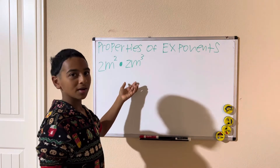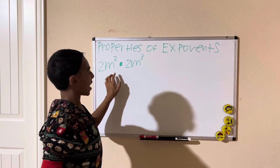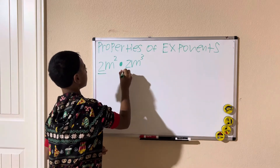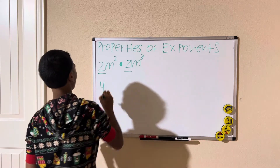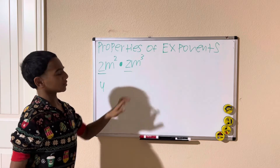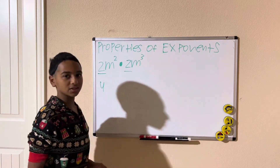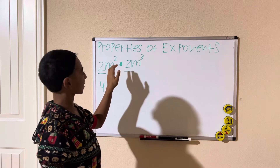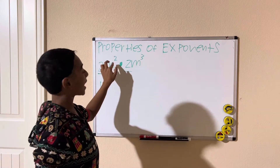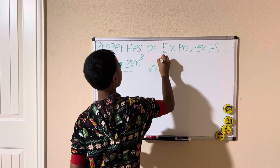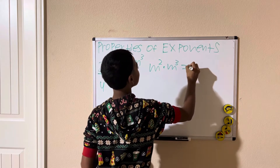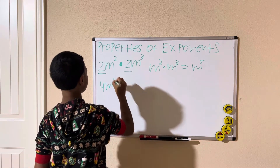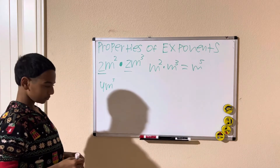We're going to separate these: 2 times 2 is 4. Now m squared times m cubed — when you have a variable raised to a power times the same variable raised to another power, you simply add the exponents. So m squared times m cubed equals m to the fifth. Our final solution is 4m to the fifth.